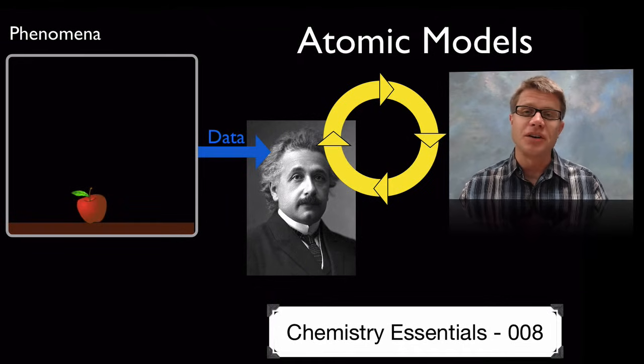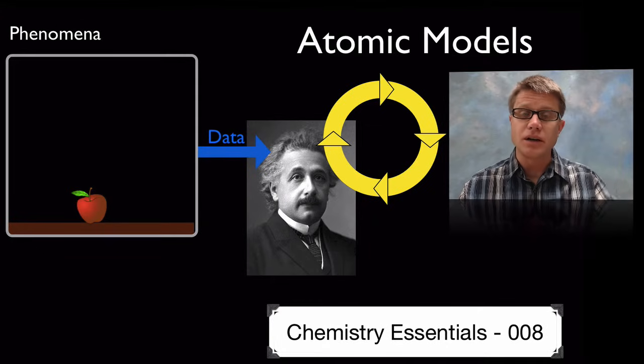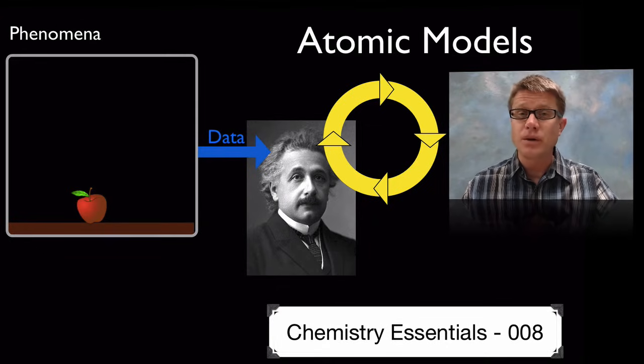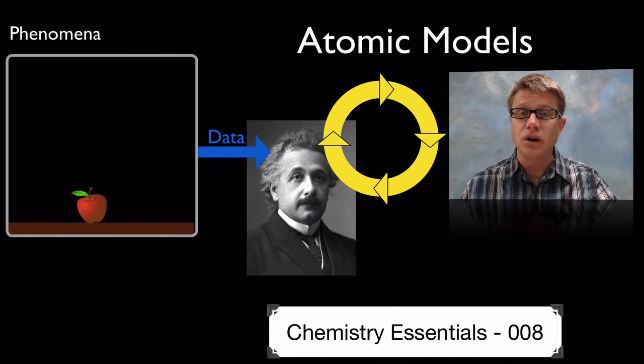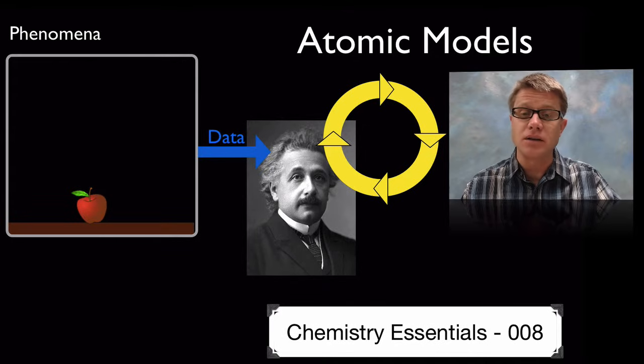So why does an apple fall to earth? It's not that there's some magical force pulling it there. What Einstein said is that they're both warping space time. And then these objects are traveling the closest path. And so light would travel along the same path. And he was able to confirm that using data.